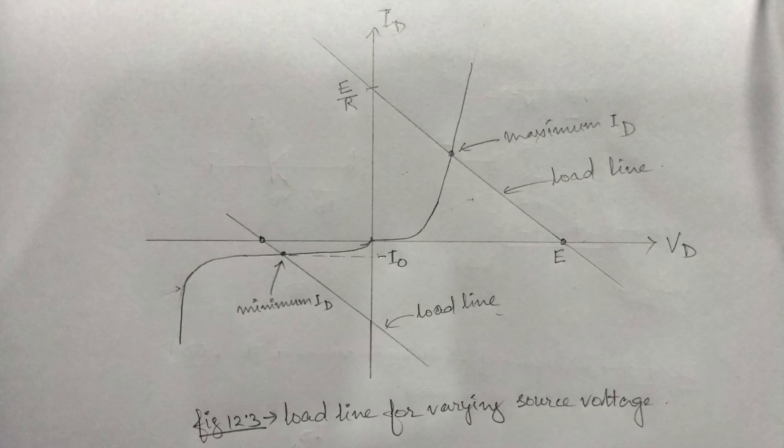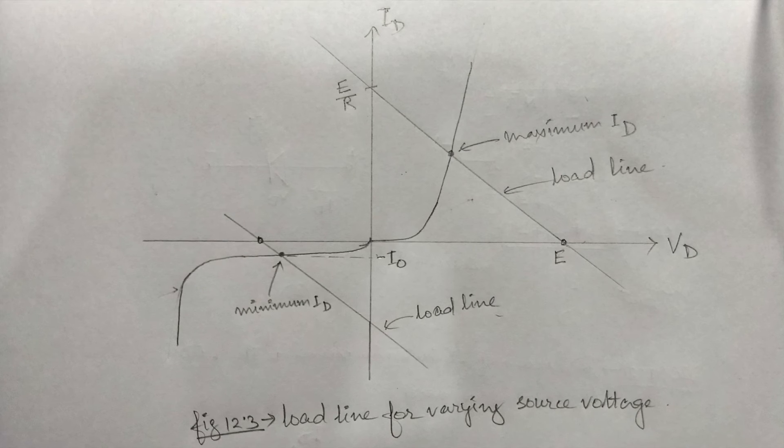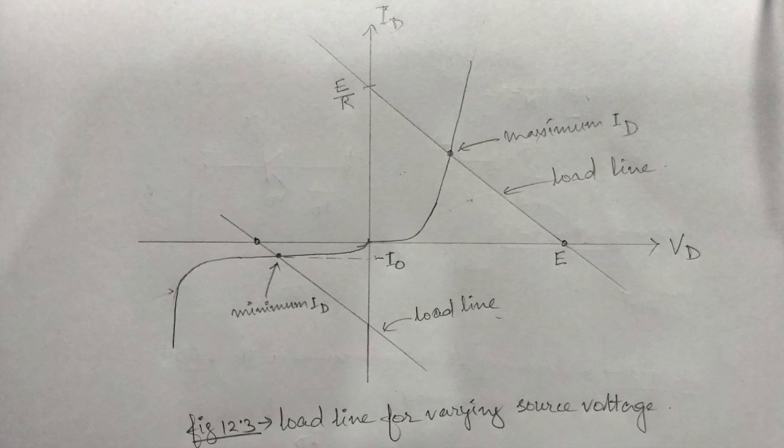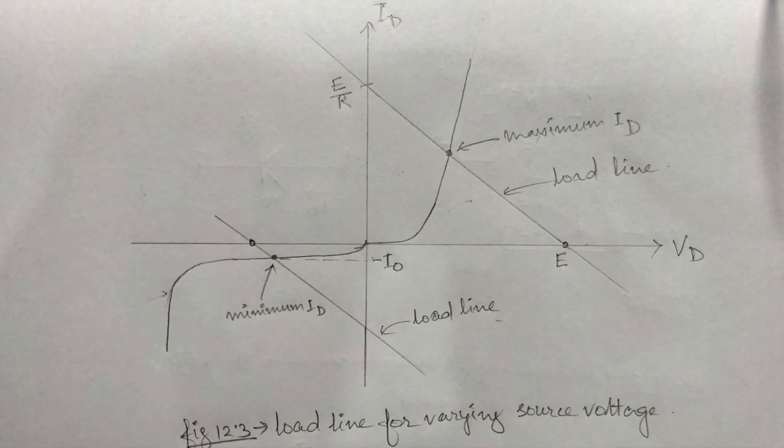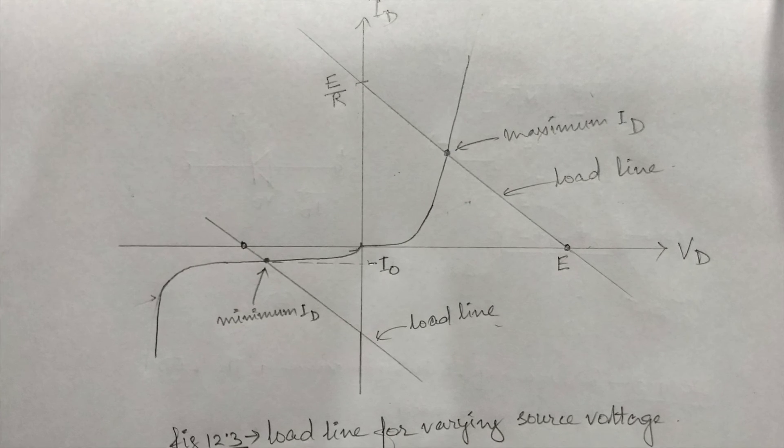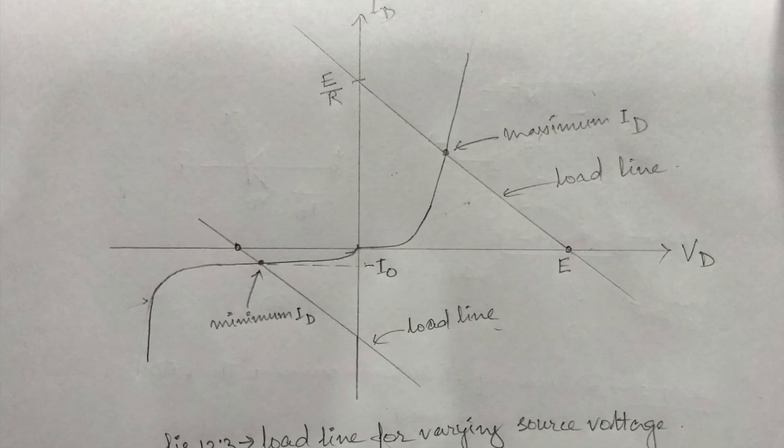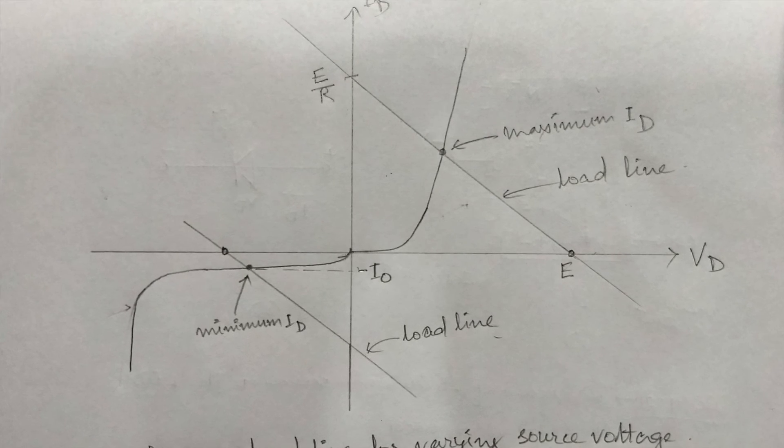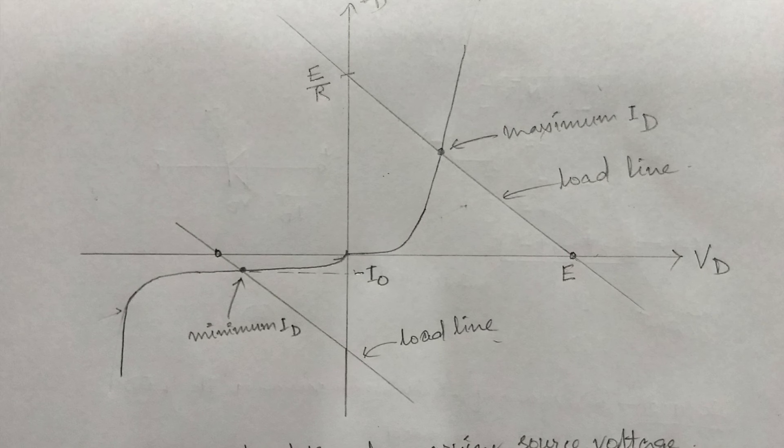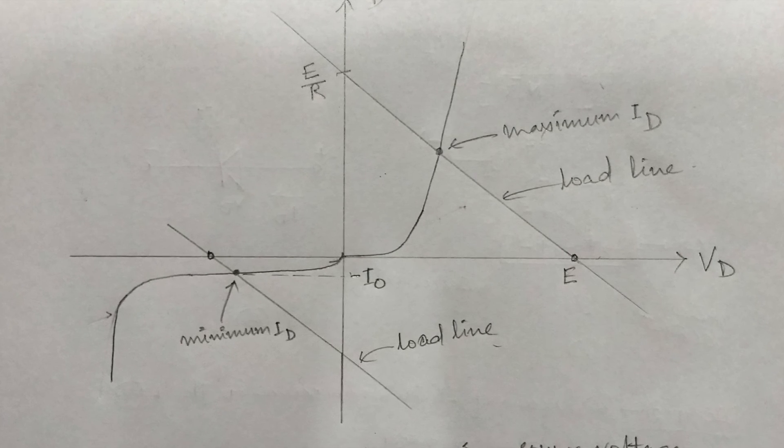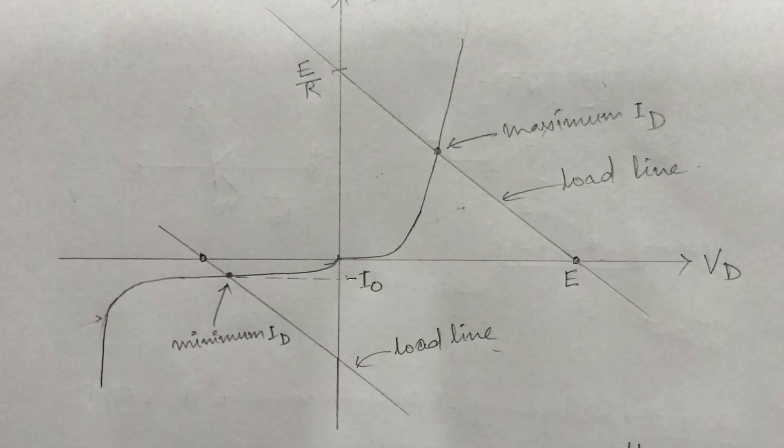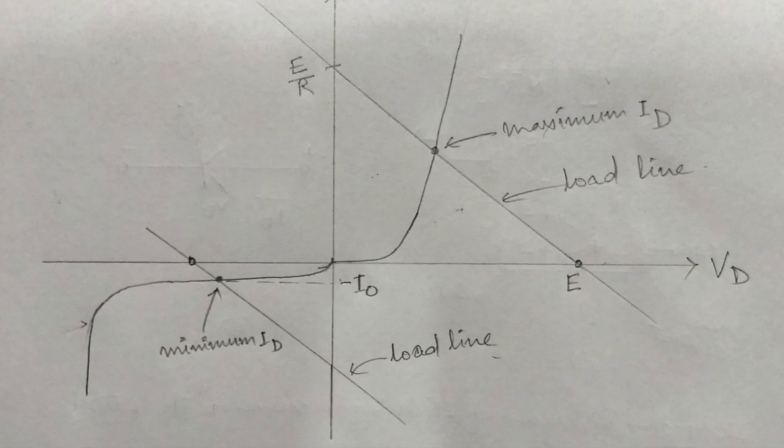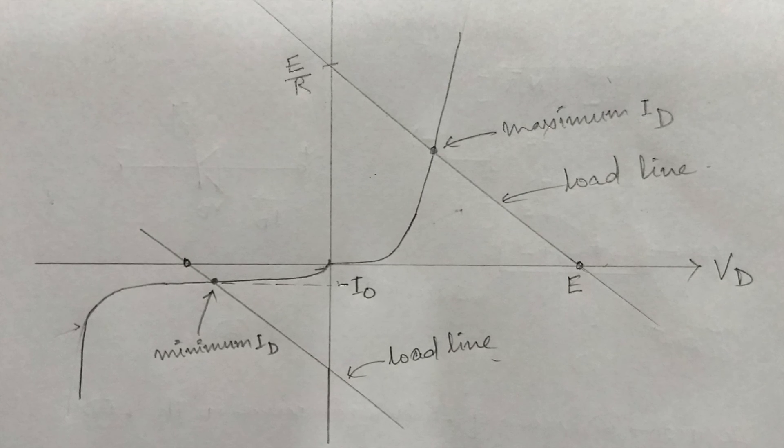Now, you will see what happens when E is equal to E of T. Here, in this case the slope is constant at minus 1 by 4, but the intercept shifts as shown in this figure 12.3. So, the maximum positive value of E of T leads to maximum current flow, and the minimum negative value of E of T leads to minimum current denoted by minus I of T.